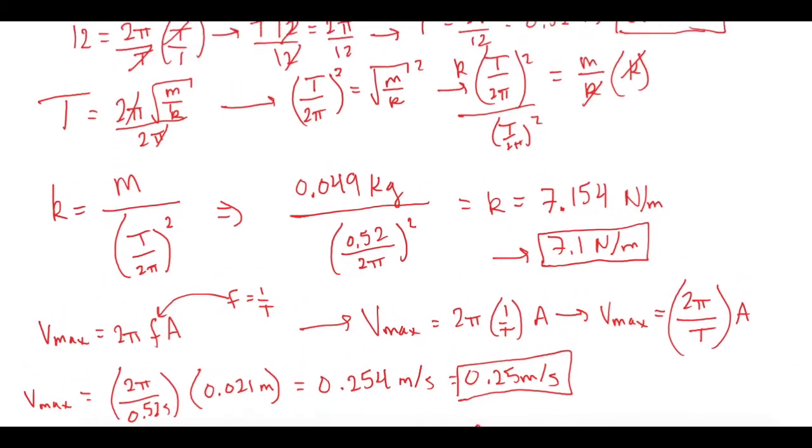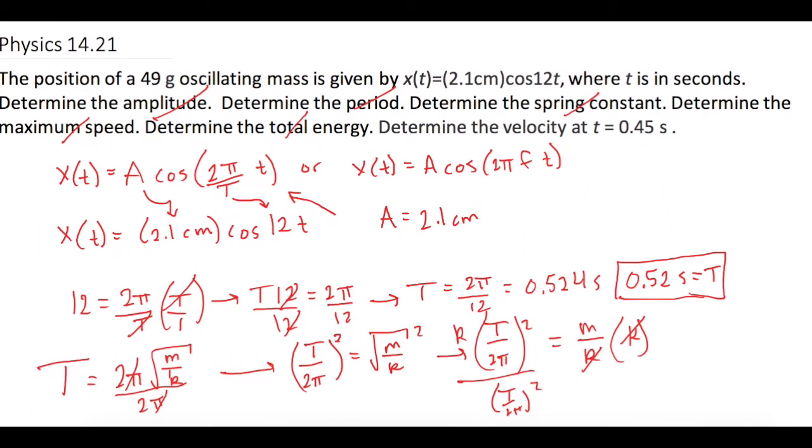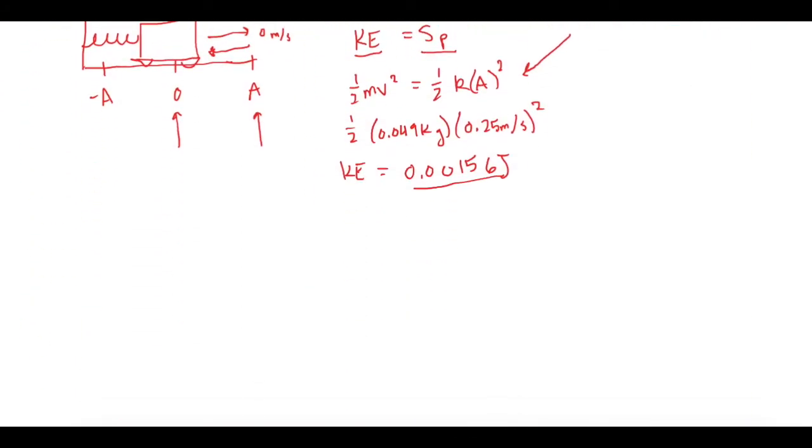Now lastly, they said, what is the velocity at t equals 0.45 seconds? So again, going back to the end of chapter summary equations, they tell us that a velocity versus time equation, V of t is equal to negative 2 pi times the frequency times the amplitude times the sine of 2 pi f t. Now you might be looking at this and be saying to yourself, holy crap, what is going on there? What it is, is if you notice, 2 pi times the frequency times the amplitude is the same as v max.